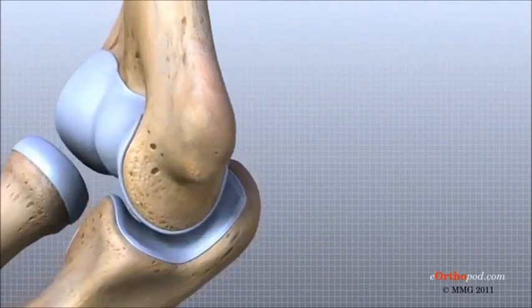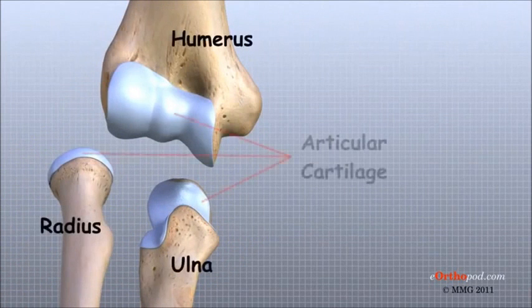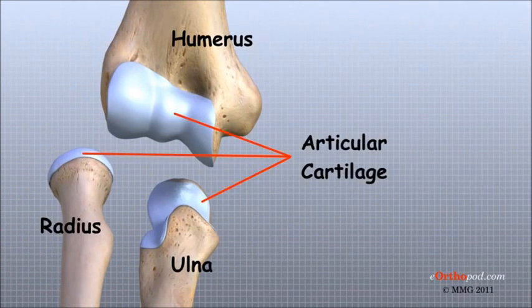In the elbow, articular cartilage covers the end of the humerus, the end of the radius, and the end of the ulna.